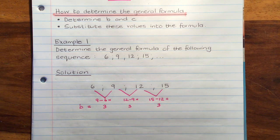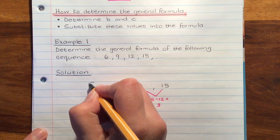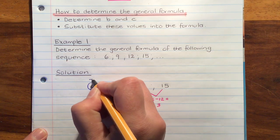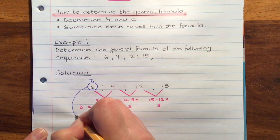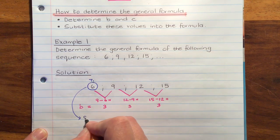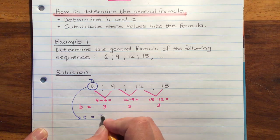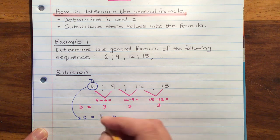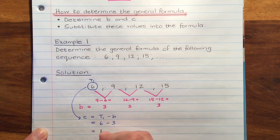Secondly, we want to work out the value of C. Now C, we first find out what is T1. And then we say C is equal to T1 minus B. In other words, T1 minus 3. In other words, 6 minus the common difference of 3, which is 3.